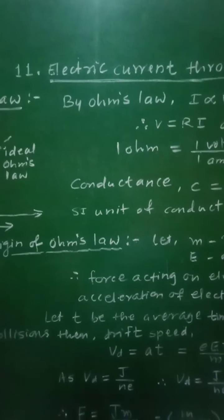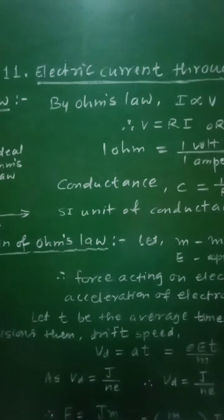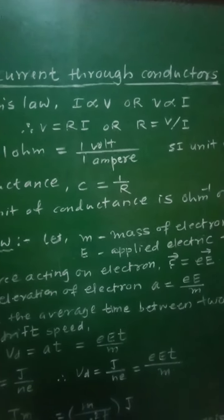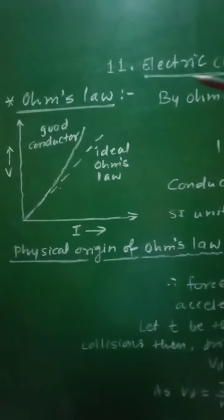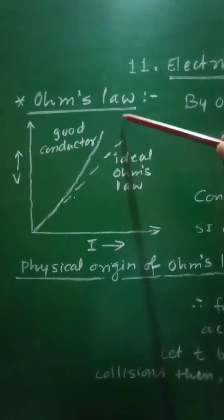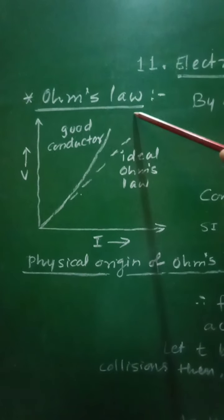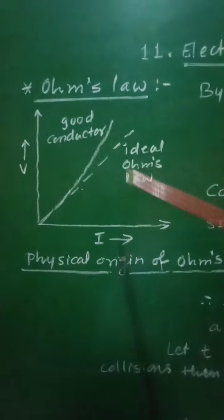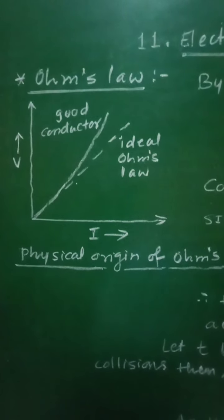Class 11th, subject physics, Chapter 11 — Electric Current through Conductors. From this chapter, let us see Ohm's Law. Ohm's Law gives the relation between the voltage applied across the ends of a conductor and the current flowing through that conductor.